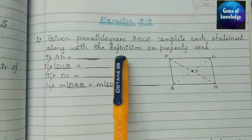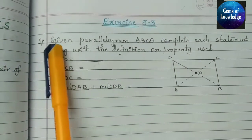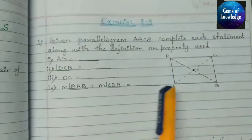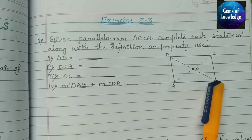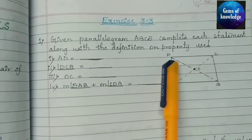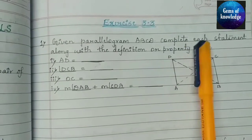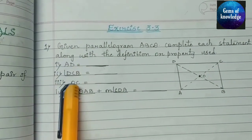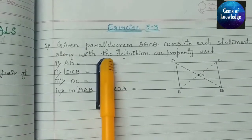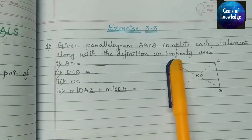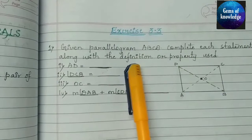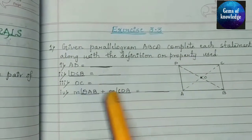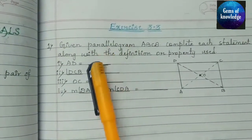Let's start with the first question: given parallelogram ABCD, complete each statement with the definition or property used. There are four statements to complete. The first one: AD equals — directly we write AD equals BC, since opposite sides are equal. That is the first property of the parallelogram.